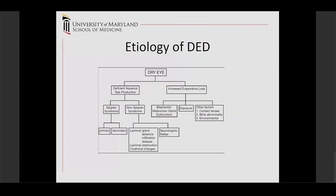The etiology of dry eye disease can be broken down in a number of ways. You can have both aqueous deficient and evaporative dry eye — it's more of a spectrum than a total separation. Aqueous tear deficiency includes Sjogren's (primary and secondary) and non-Sjogren's causes such as lacrimal gland dysfunction, lacrimal obstruction, cicatricial eyelid changes, and neurotrophic components. Evaporative loss is due to meibomian gland dysfunction, exposure, contact lenses, blinking problems, or environmental factors.